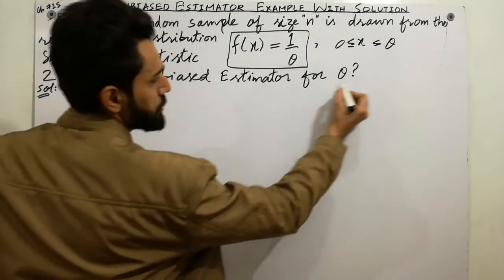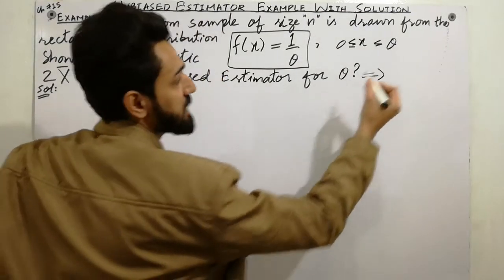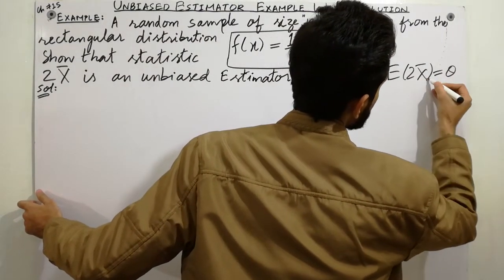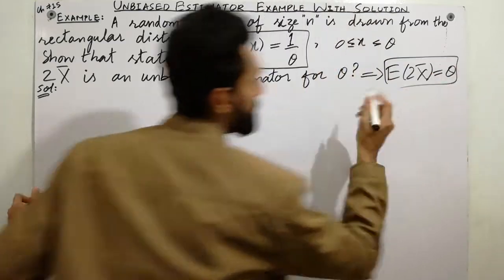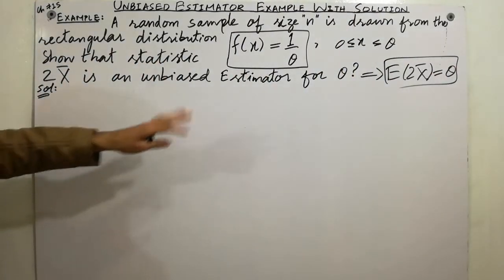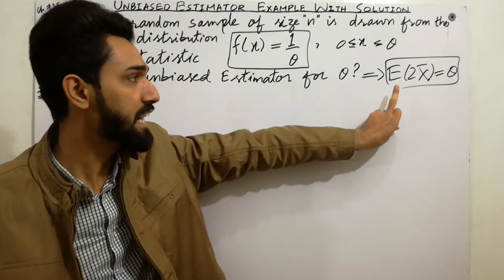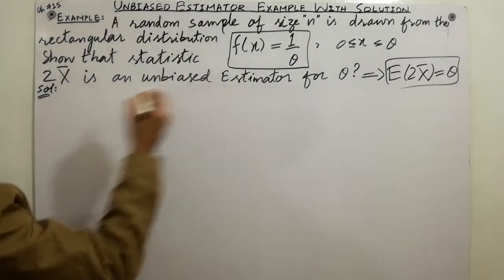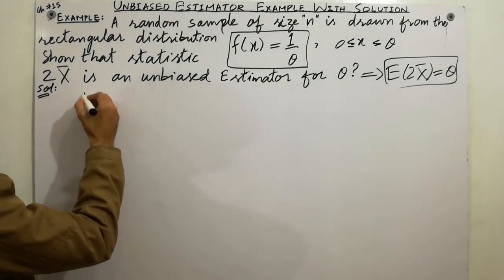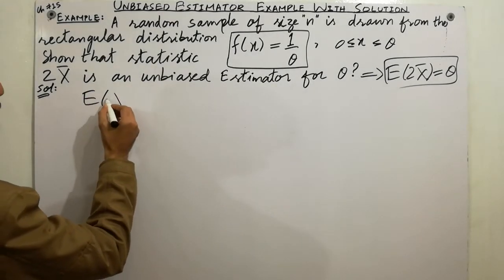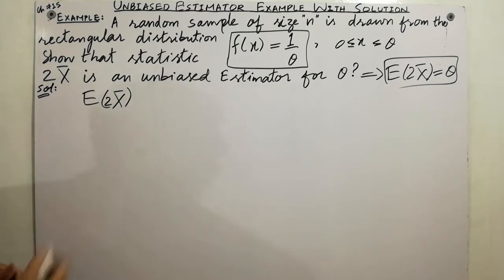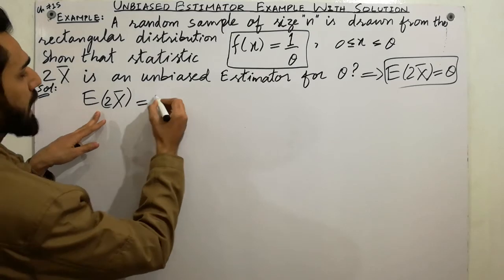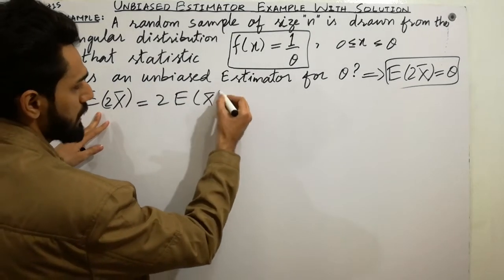You have to show that the expectation of 2x̄ is equal to theta. That is the main part of this lecture. First of all, I take the expectation of 2x̄, and since 2 is a constant, I put it outside: 2 × expectation of x̄.